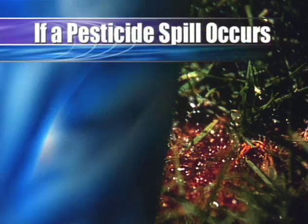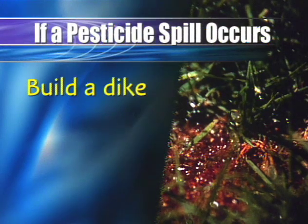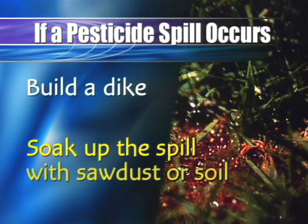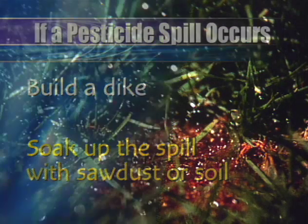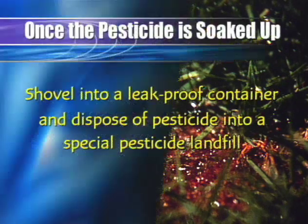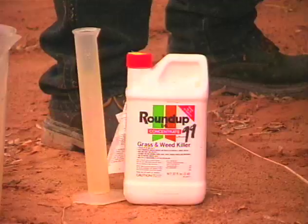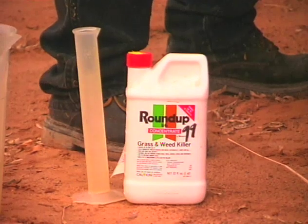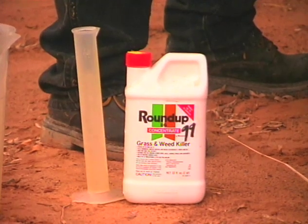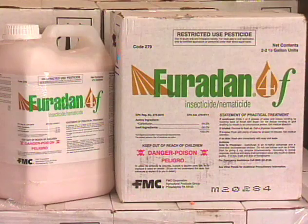If pesticides are spilled, confine the spill by building a dike or by soaking up the spill with sawdust or soil. Once soaked up, shovel into a leak-proof container for disposal into a special pesticide landfill. Wash containers at least three times before disposal. All containers must be destroyed or buried after use.